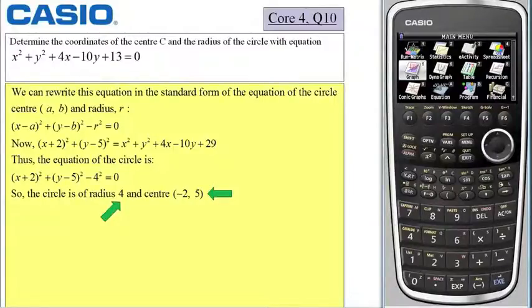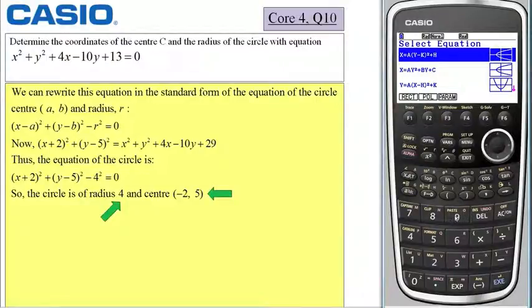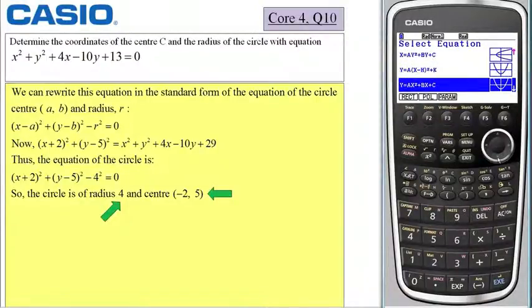I want to use graph option 9, the conic graphs. It gives me different options and I am going to scroll down until I find the equation of a circle. There is one form of the equation of a circle and there is another form, and that is the one I would like, so I select execute.